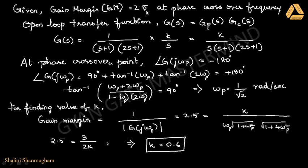We know that the given gain margin is 2.5. At the phase crossover frequency, the angle of the transfer function is −180°. So we find the phase angle: −90° − tan⁻¹(ωp) − tan⁻¹(2ωp) = −180°. After applying the tangent formula, you get the phase crossover frequency ωp = 1/√2 radians per second.